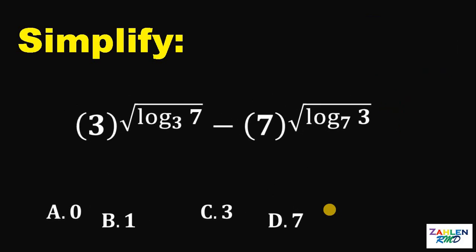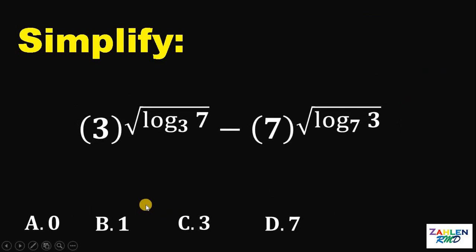Now, let's answer this question together. Our goal is to simplify this expression: 3 raised to square root of logarithm of 7 to the base of 3 minus 7 raised to square root of logarithm of 3 to the base of 7. Now, how are we going to answer this question?